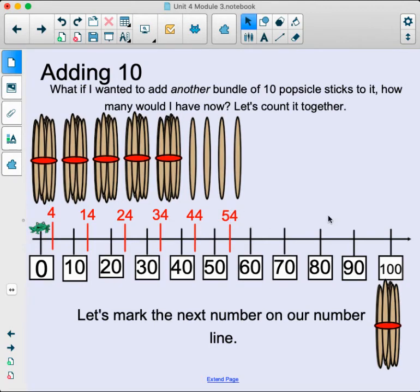And we keep going and going and going and adding bundles of 10. So we have bundles of 10. 1, 2, 3, 4, 5. That's where we get the 50 from. 5 bundles of 10 is 50. And then we have 4 singles here. So that would equal 54.